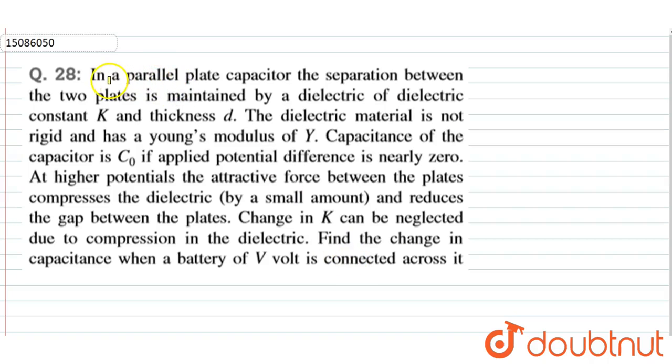In this question, we have given a parallel plate and the separation between the two plates is maintained by dielectric. We have given a dielectric constant K and its thickness d. The dielectric material is not rigid and has Young's modulus Y. Capacitance of the capacitor is C0. If applied potential difference is nearly zero.